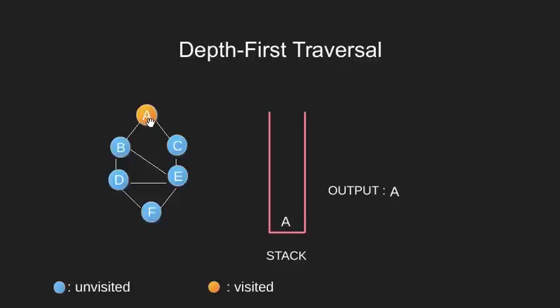Next we will look at the adjacent unvisited nodes of A. B and C hold the criteria. We may pick any of them. We will go and choose B. Push node B into stack, print it and visit it.